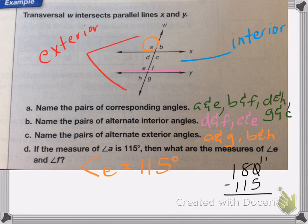Borrow from the 8, 8 becomes a 7, 0 becomes 10, 10 minus 5 is 5, 7 minus 1 is 6, 1 minus 1 is 0. So that means angle F is equal to 65 degrees.